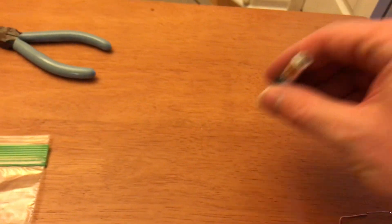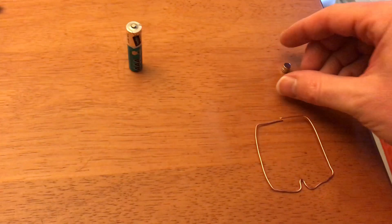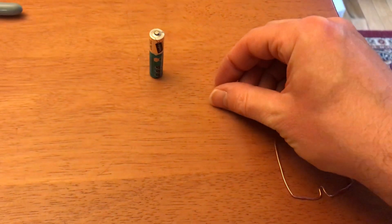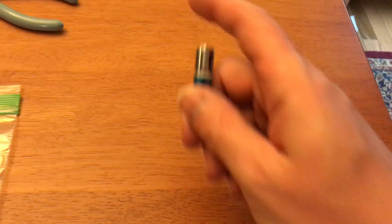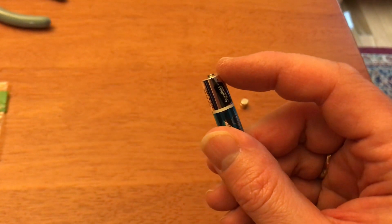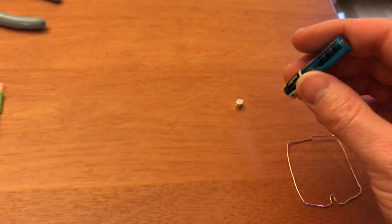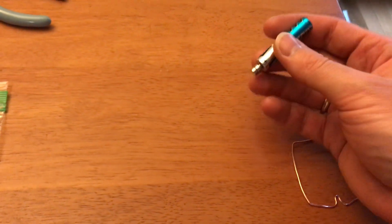Alright, so here's what you do. You take your triple-A battery, you take your two magnets, and what I recommend you do is take the positive side of the battery, that's the side with the little nub at the end of it sticking out like that.